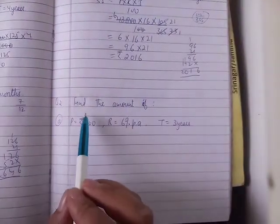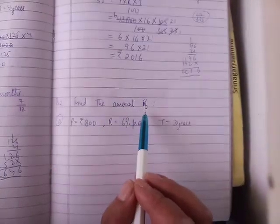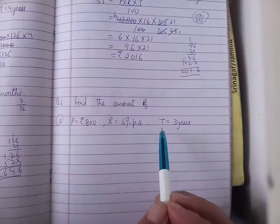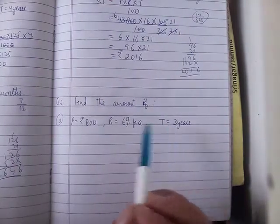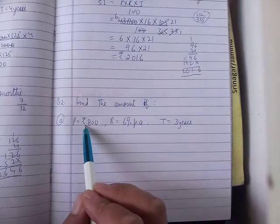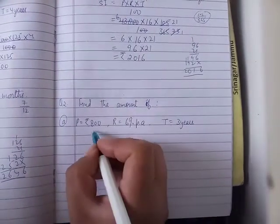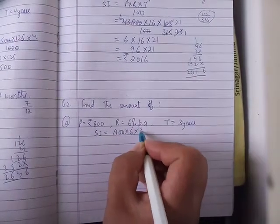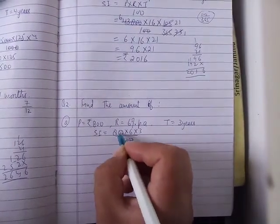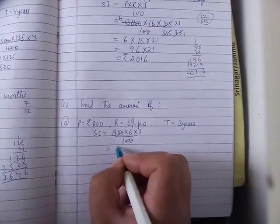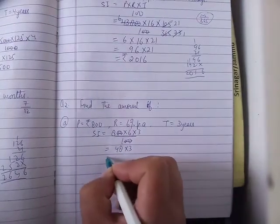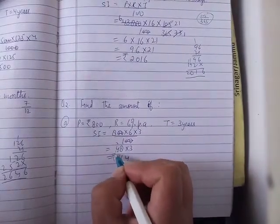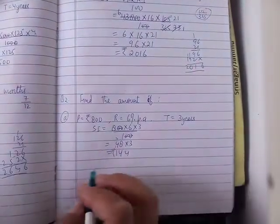Next question part A is to find the amount. Amount is principal plus interest. Interest is principal into rate into time upon hundred. Zero zero cancel. Then 8 times 6 is 48 into 3. Three times 4 is 12, 13, 14, one hundred and forty-four is the simple interest.